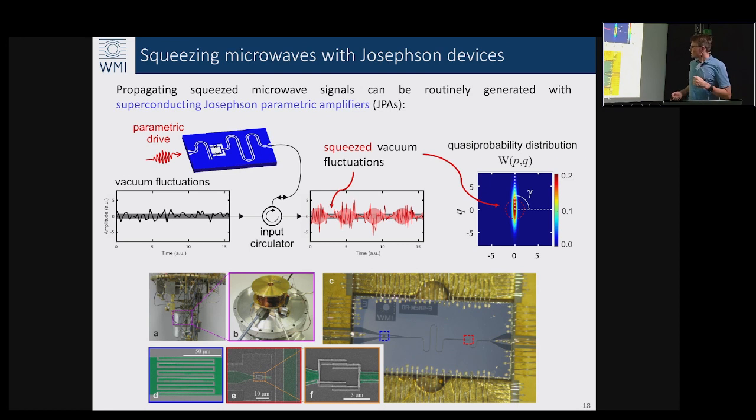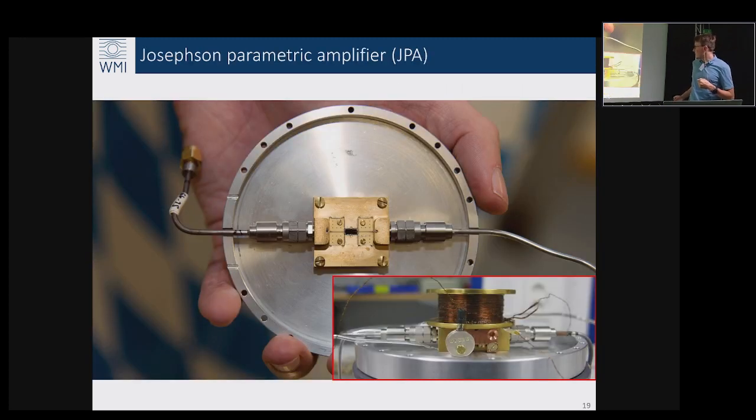This is how we generate our signals. There is a classical analog of the system which is a child on the swing, but I don't have time to talk in detail about these analogies. This is how the system looks like: such a chip 2.5 by 5 millimeters, this is the area of the SQUID.